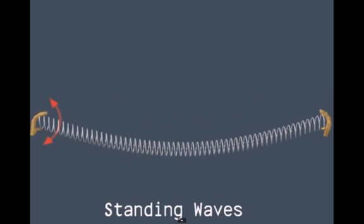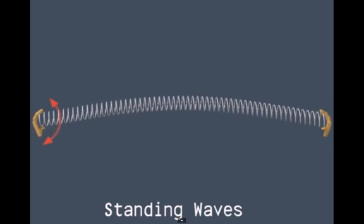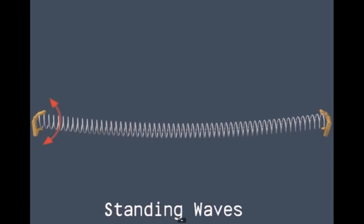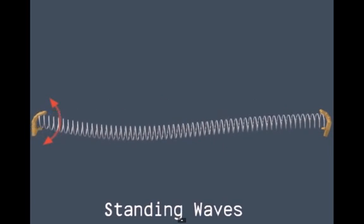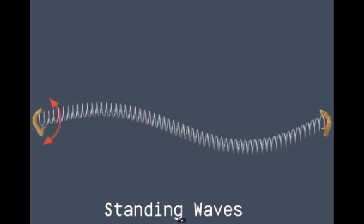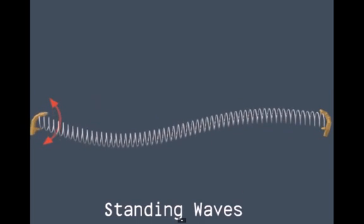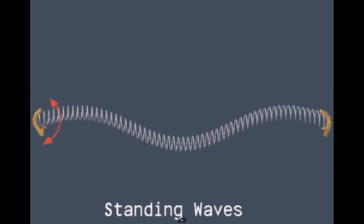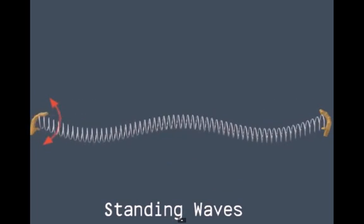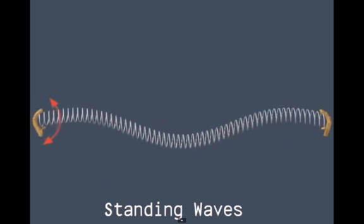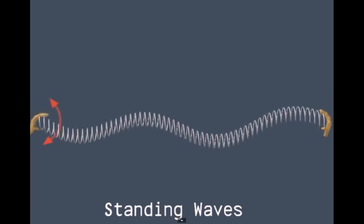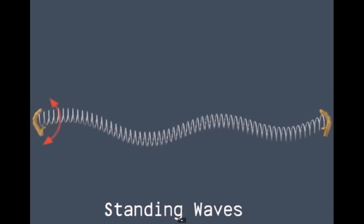By oscillating a slinky up and down you can create a first harmonic — the whole slinky going up and down. If you oscillate the slinky faster, you can create a second harmonic with two maxima and one node in the middle. Even faster, you can create a third harmonic with three maxima and two nodes. And even faster than that, a fourth harmonic with four maxima and three nodes.